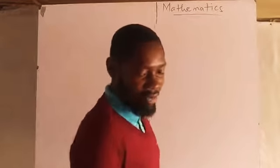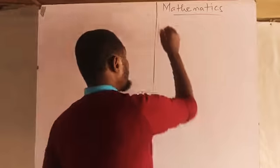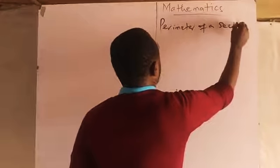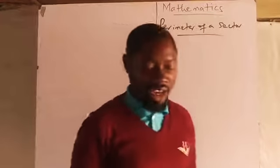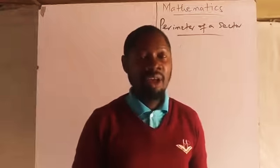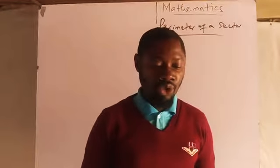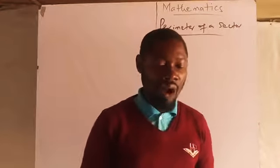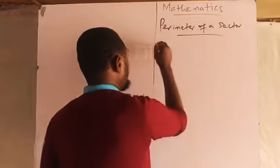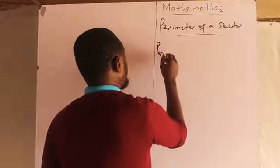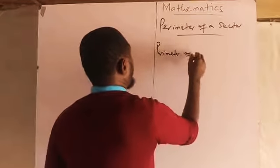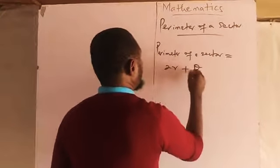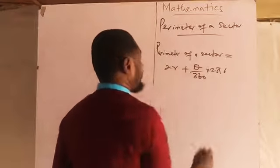Let us consider the perimeter of a sector. The perimeter of a sector is simply adding two radii to the length of arc. The formula is: perimeter of a sector equals two r plus theta over 360 times two pi r.